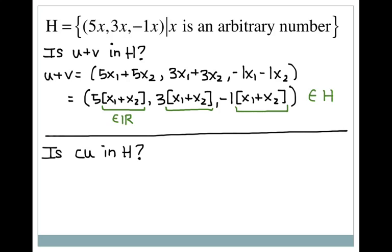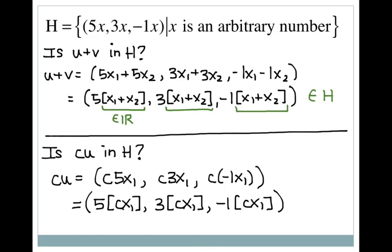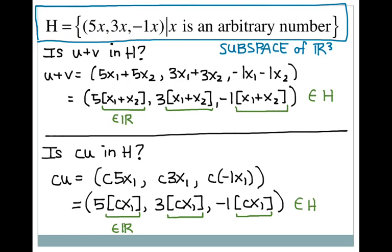For scalar multiplication, cu multiplies each component by c: (5cx1, 3cx1, -cx1). Pulling out 5, 3, and -1, I get 5(cx1), 3(cx1), and -1(cx1). Since cx1 is a real number and the same in each component, this meets the criteria for being in H. So H is a subspace of R3.